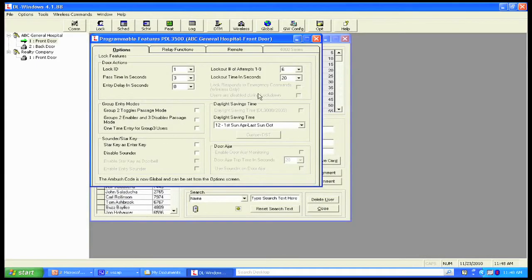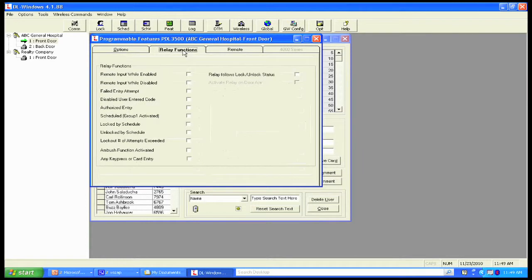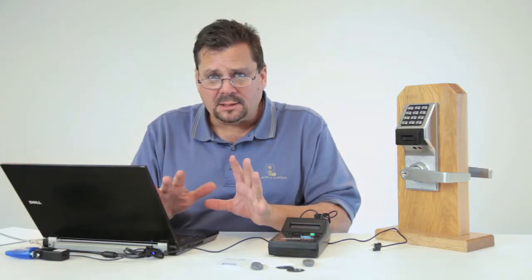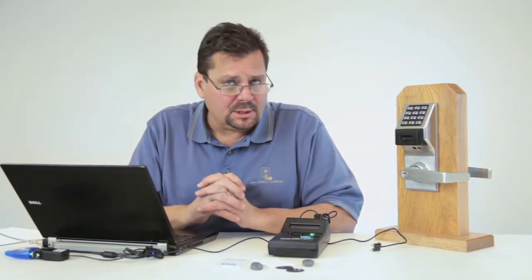We can also set the lockout attempts. After six attempts, the keypad locks out for 20 seconds. Because it records a keypad lockout on the audit trail, that tells me someone's been sitting there playing with the lock. This tab here, relay functions, means whatever I want the relay to perform. Virtually all of our locks have a form C dry contact in it, meaning I can wire that to some other type of product. We can have it shunt an alarm system or activate a CCTV camera.